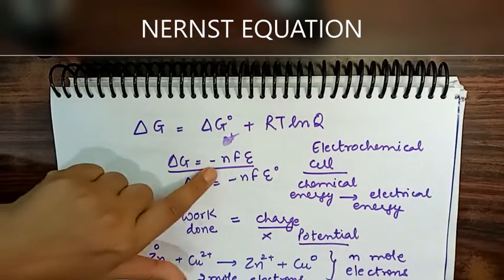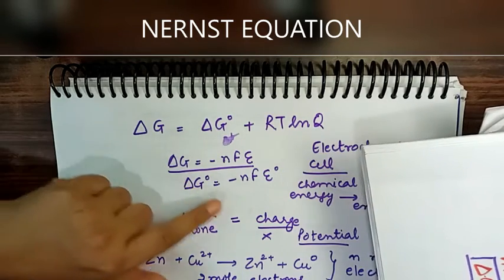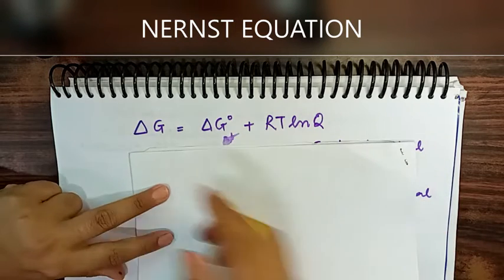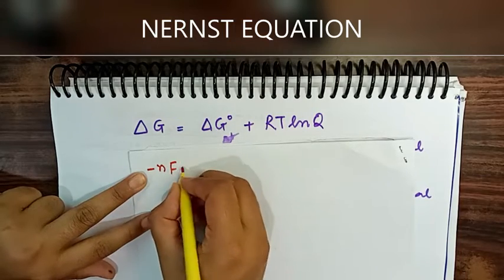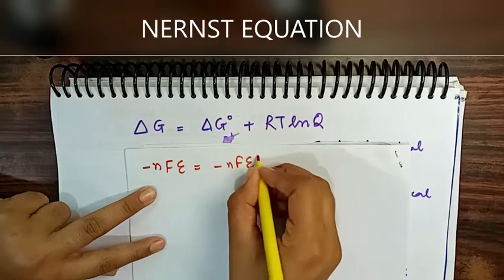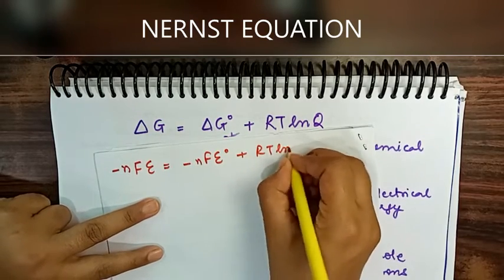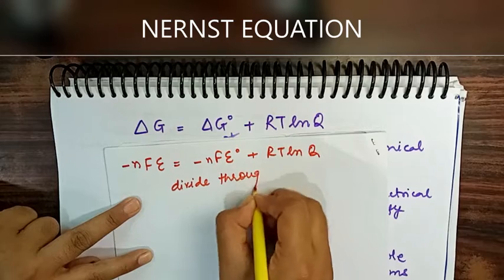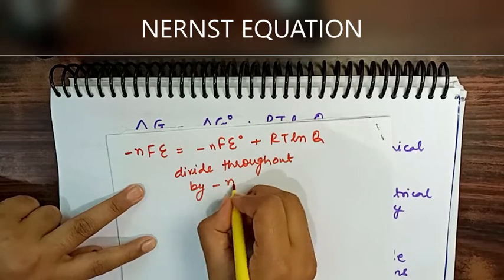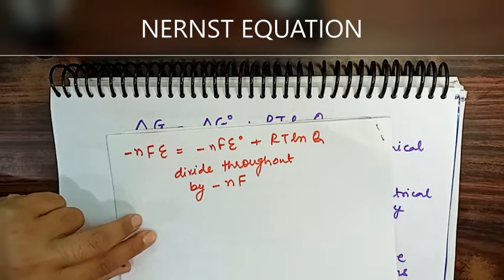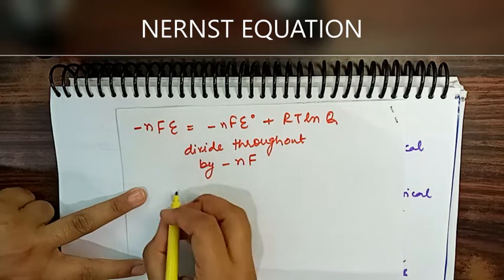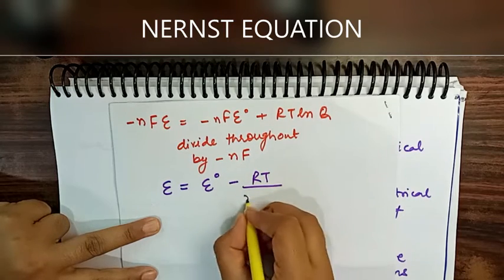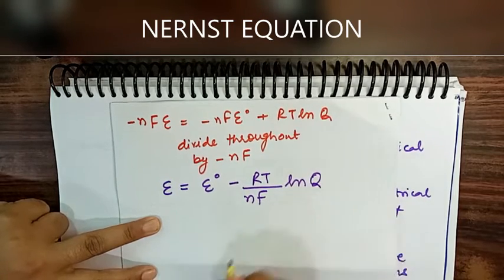Substituting ΔG = -nFE and ΔG° = -nFE° into ΔG = ΔG° + RT ln Q, we get: -nFE = -nFE° + RT ln Q. Dividing throughout by -nF gives: E = E° - (RT/nF) ln Q.